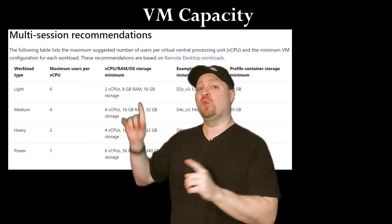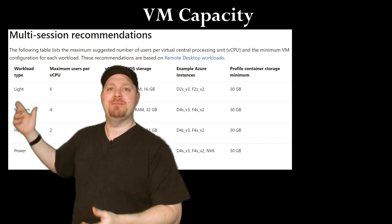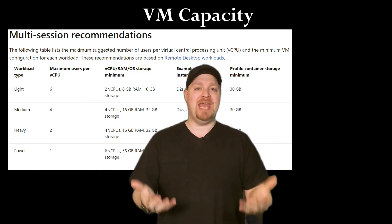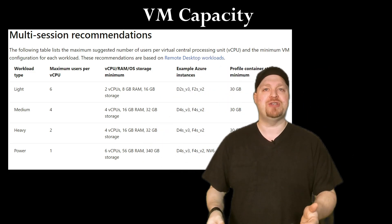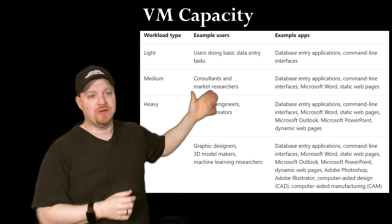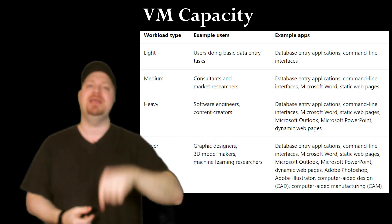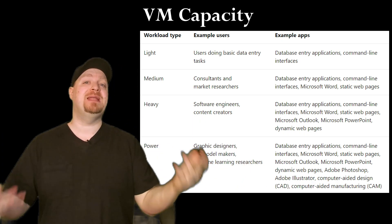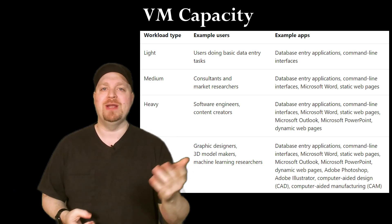At first glance, there is one thing in this table that's not so clear, and that's the definition of light, medium, heavy, and power. Thankfully, the product team has given a link to another Azure documentation page for remote desktop services where these are defined. That'll lead you to a table that defines each workload type. Just remember that these are general guidelines and recommendations — it's far more detailed and involved than just how many CPU cores to throw at an application.